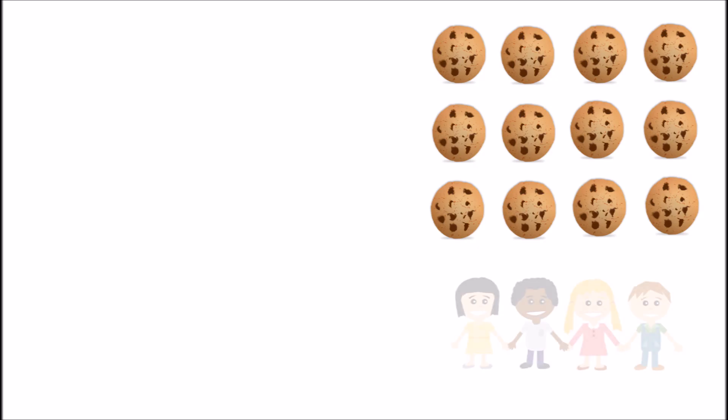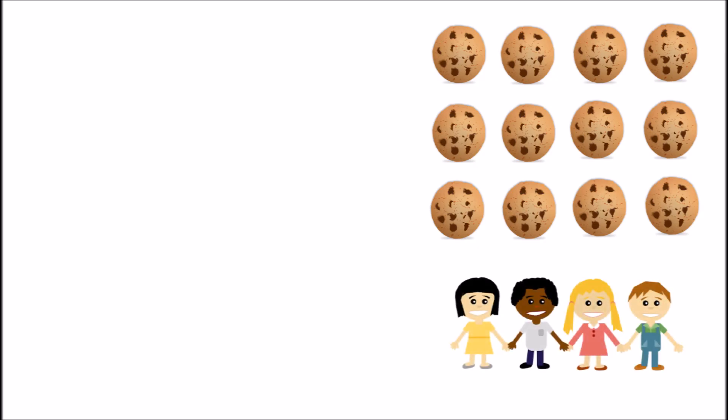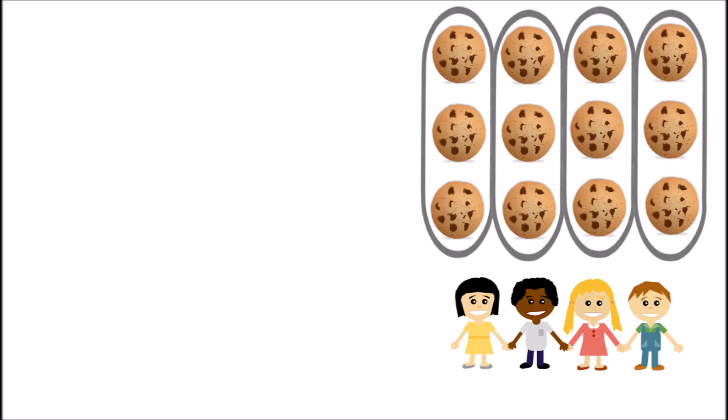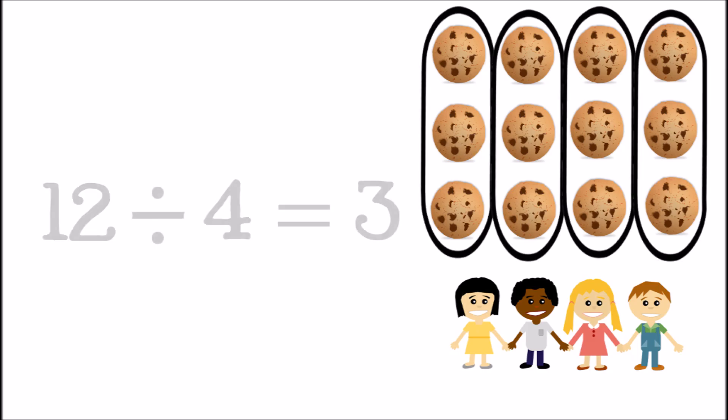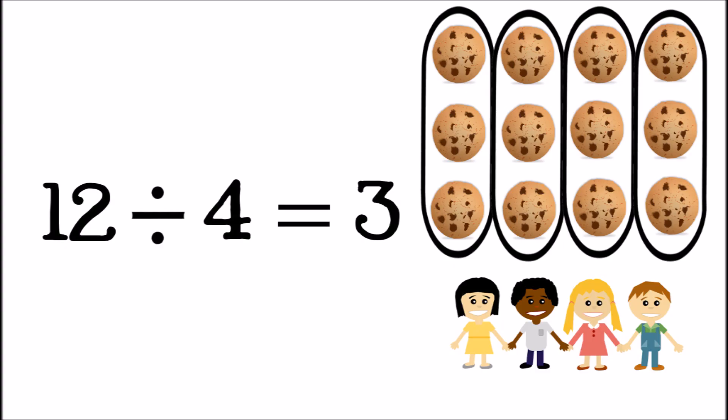Let's imagine there are twelve cookies, and four people want to share them. How many cookies should each person get if the cookies are shared equally? To get the answer, you must divide the cookies four ways. Twelve divided by four equals three. Each person should get three cookies.